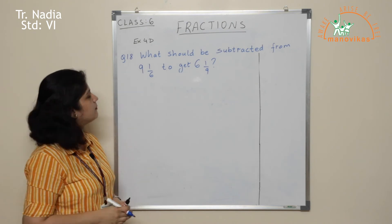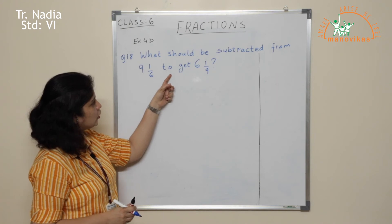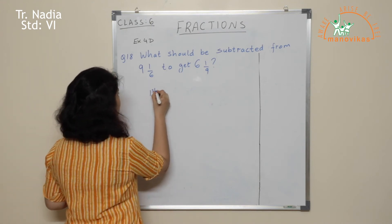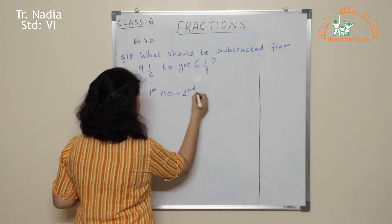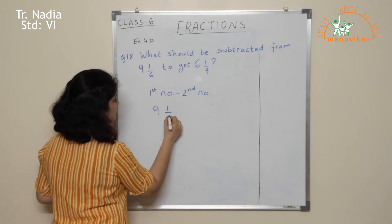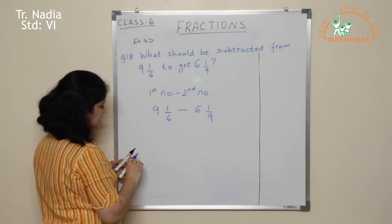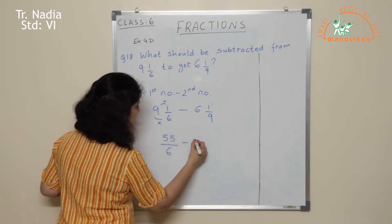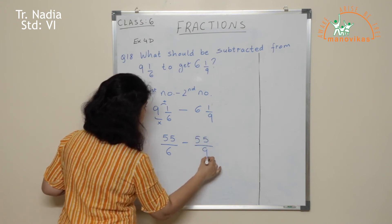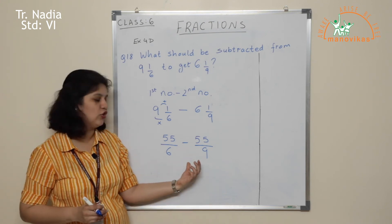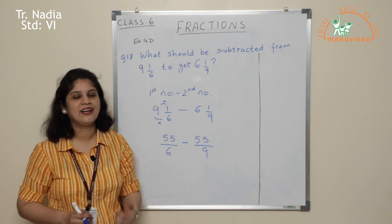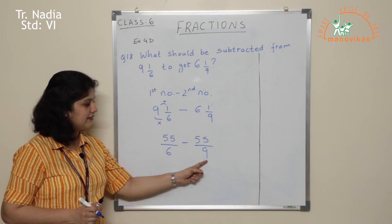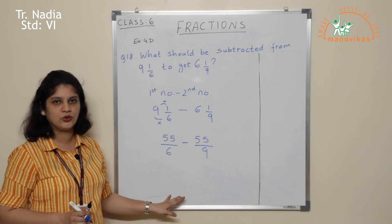Question 18: what should be subtracted from 9 and 1 upon 6 to get 6 and 1 upon 9? When the words say 'what should be subtracted,' do first number minus second number. So it is 9 and 1 upon 6 minus 6 and 1 upon 9. Converting: this becomes 55 upon 6 minus 55 upon 9. Though the numerators are the same, the denominators are different — they are unlike fractions. Find the LCM of 6 and 9, make them like, then subtract to get your answer.